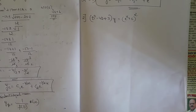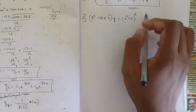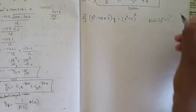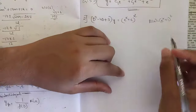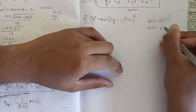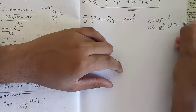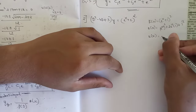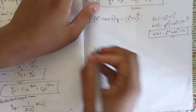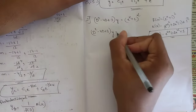The second question is: (D² - 4D + 3)y = (e^x + 1)². Here r(x) = (e^x + 1)². We simplify using the (a+b)² identity: r(x) = (e^x)² + 2·e^x·1 + 1² = e^(2x) + 2e^x + 1. So the equation becomes: (D² - 4D + 3)y = e^(2x) + 2e^x + 1.